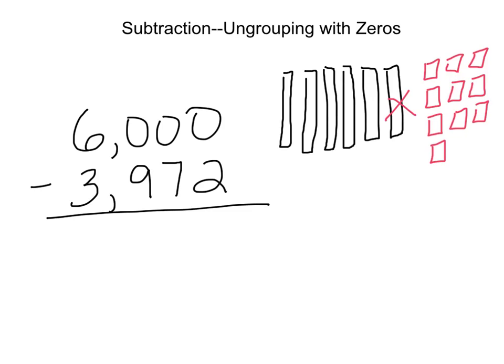In a traditional problem, that would mean that I would take away or ungroup from that 6,000 and leave 5,000 there, and then regroup that to create ten hundreds over here. That's good for the hundreds place, but we still don't have anything in that ones place to be able to subtract 2 from.